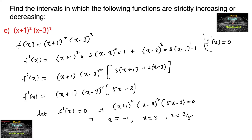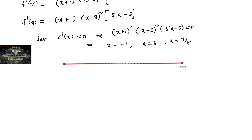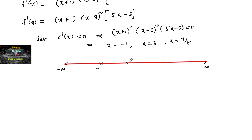These three values of x will divide the number line. We divide the real line into four parts. On the number line from −∞ to +∞, we mark the points −1, 3/5, and 3 in order.